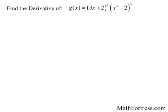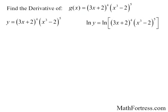Let's see this technique in action. Find the derivative of g of x equals the quantity 3x plus 2 raised to the power of 4 times the quantity x cubed minus 2 raised to the power of 5. First step: rewrite g of x as a dependent variable y, and then take the natural logarithm of both sides to simplify the expression into a derivative-friendly form using the laws of logarithms.